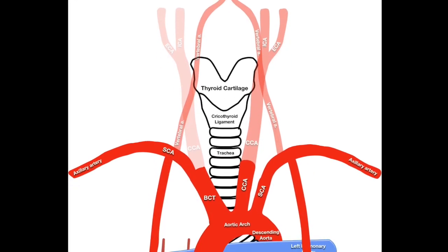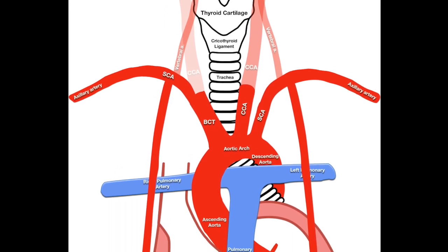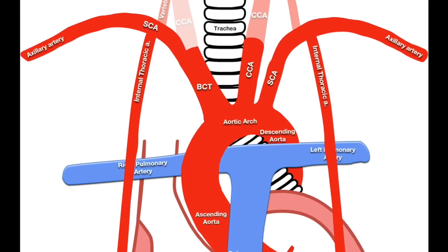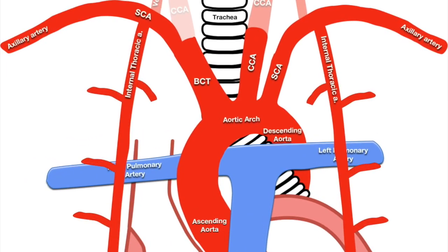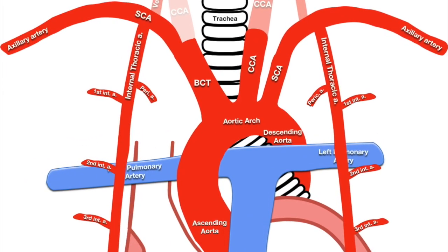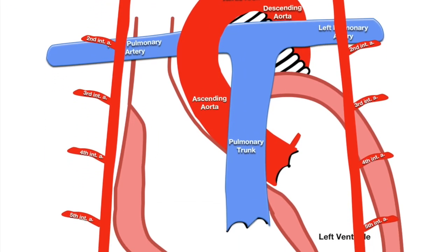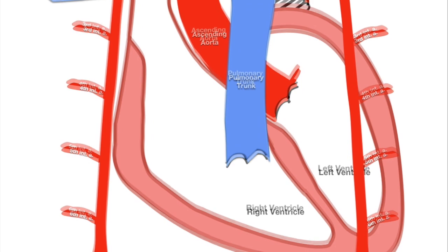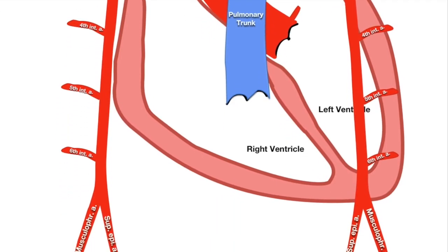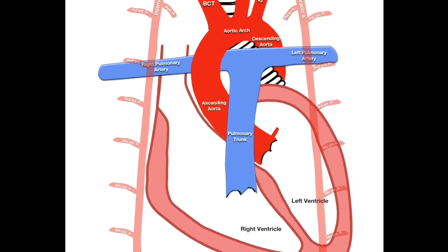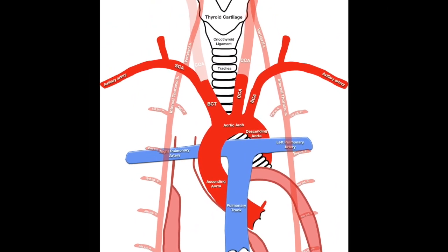The second branch of the subclavian artery usually arises from its inferior aspect. This is the internal thoracic artery which descends along the anterior thoracic wall to supply various tissues. Notable branches are the pericardial, phrenic and the first six anterior intercostal arteries. It terminally bifurcates at the sixth intercostal space to form the musculophrenic and superior epigastric arteries. Therefore, the internal thoracic artery supplies the anterior wall of the thorax and abdomen as well as the respiratory apparatus.